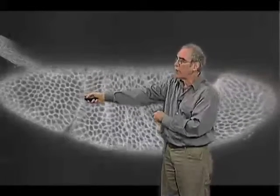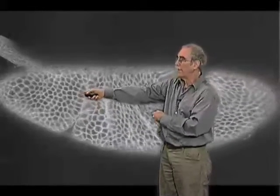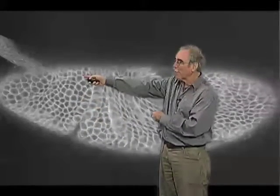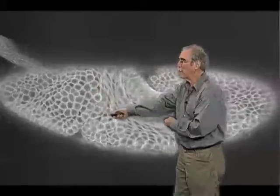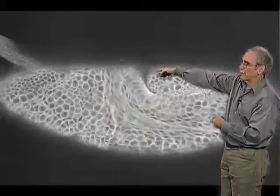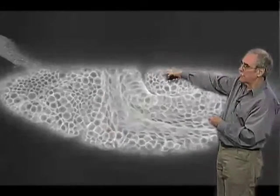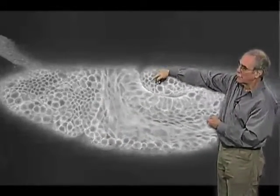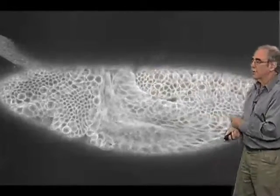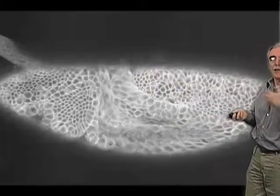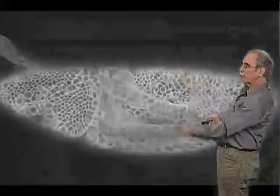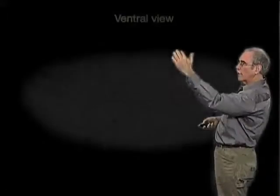Embryos always make a head right here, always separated by folds. These cells here that are moving into this invagination are ultimately going to form the endodermal, or gut, regions of the embryo.